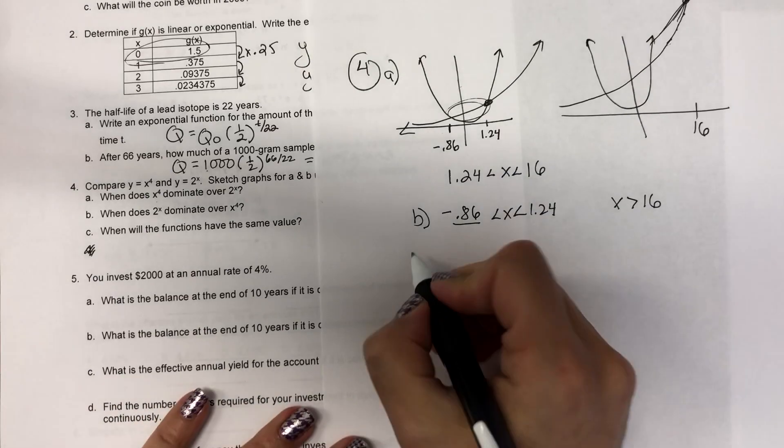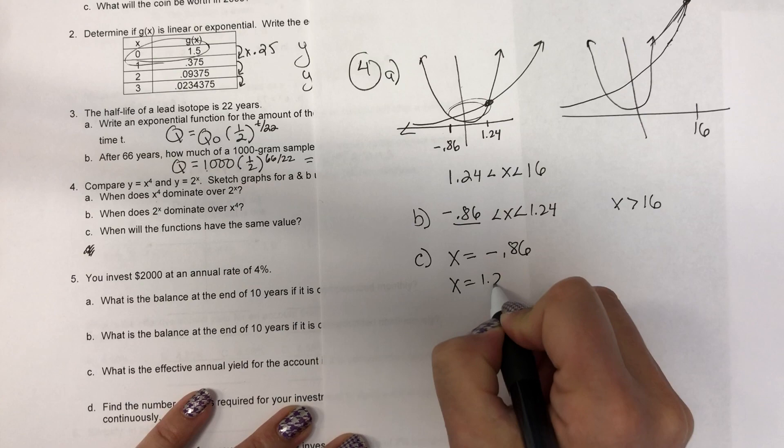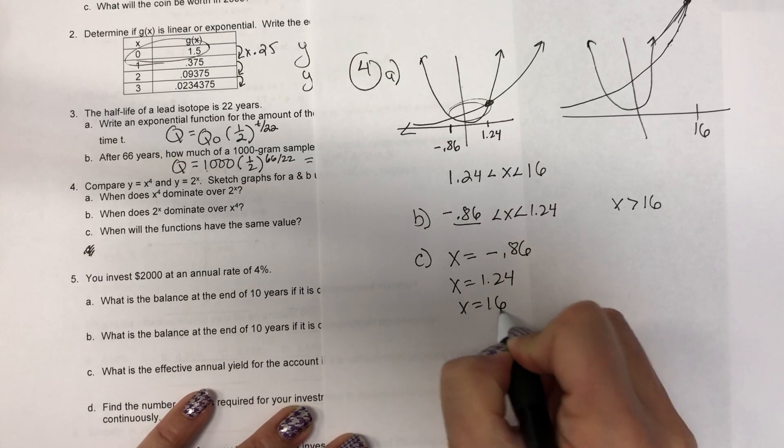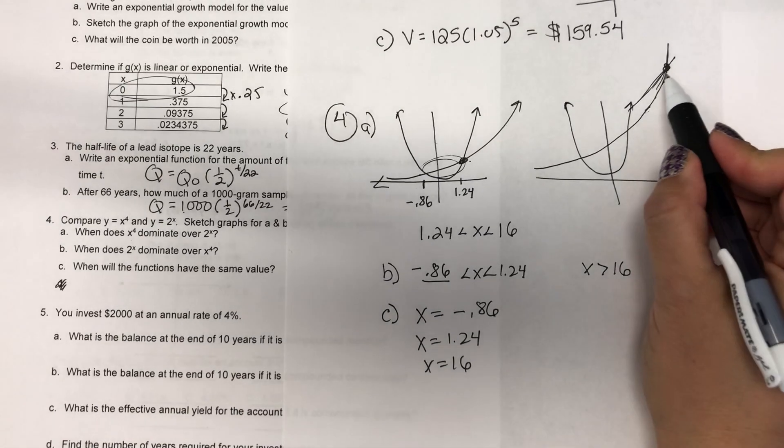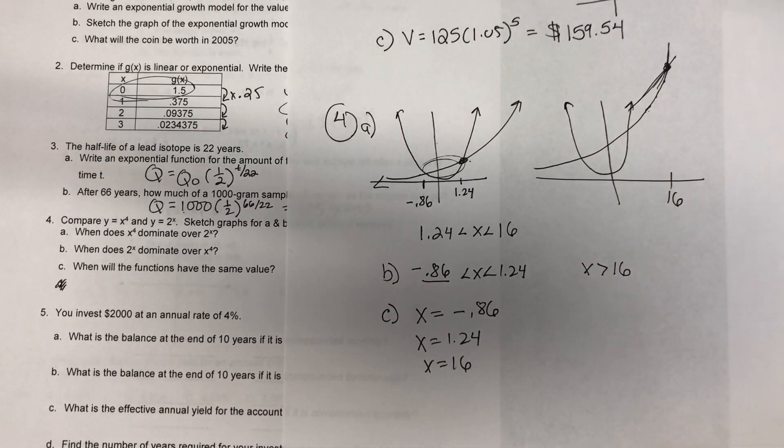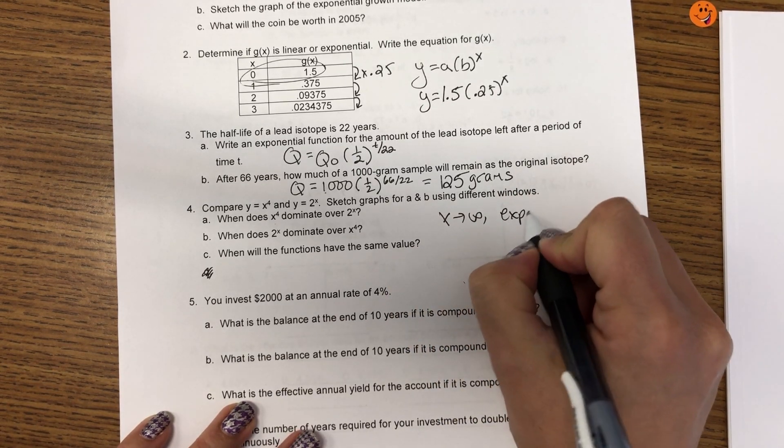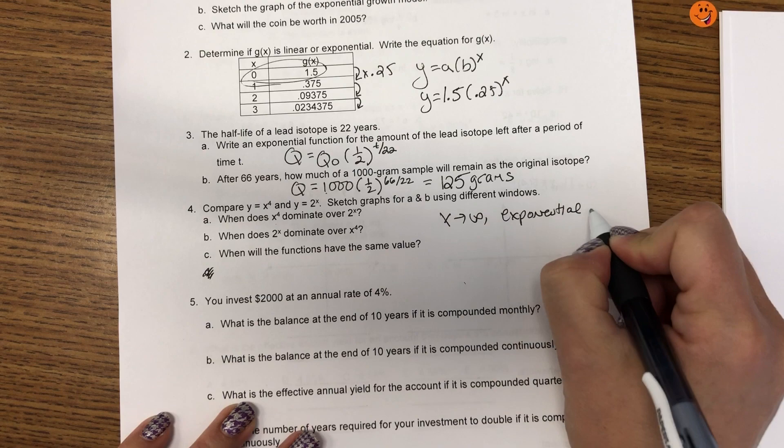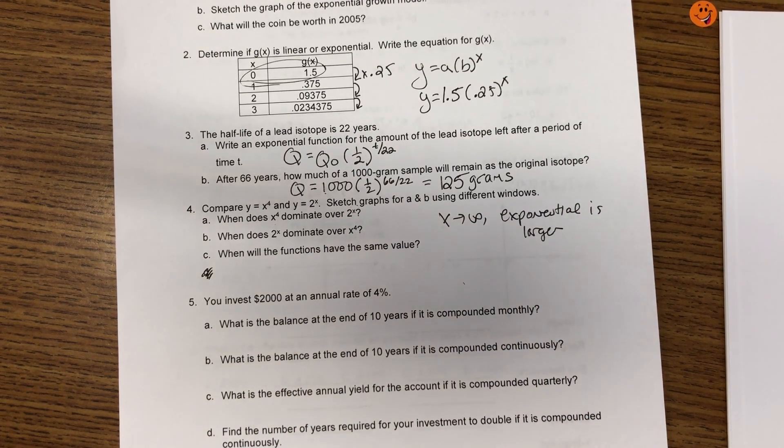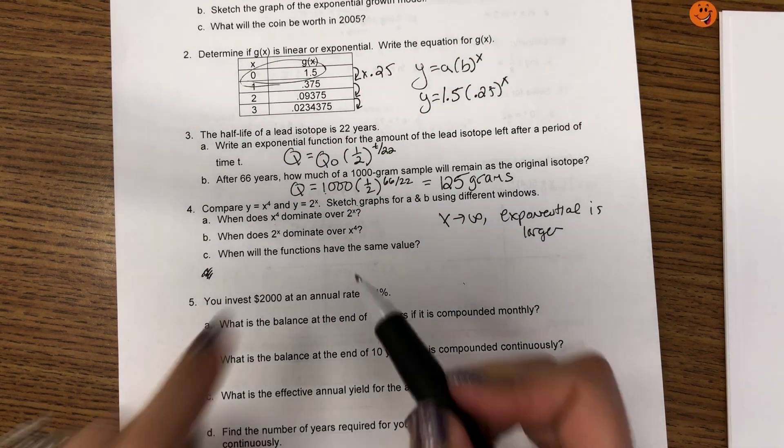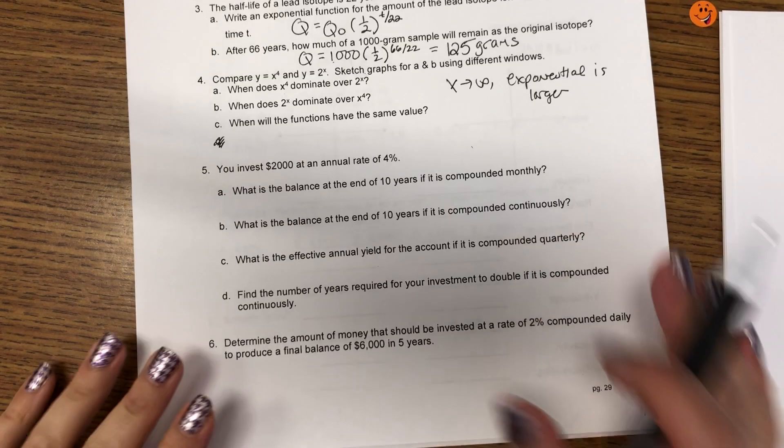Negative 0.86. So, C, when will the functions be the same? That's when X is negative 0.86, when X was 1.24, and when X was 16. All three of those points, 1, 2, and all the way over here at 3. I can't see the third one. So, in general, for number four, as X goes to infinity, the exponential function will be larger because the X is the exponent. So, the exponent will automatically be larger than an exponent that's not changing.